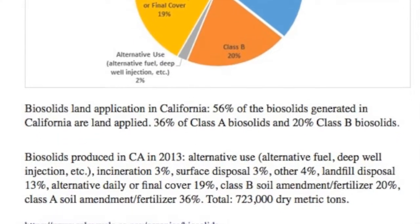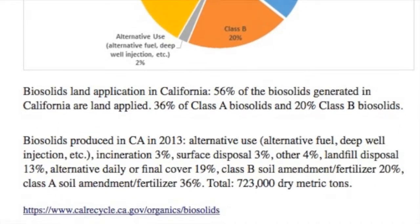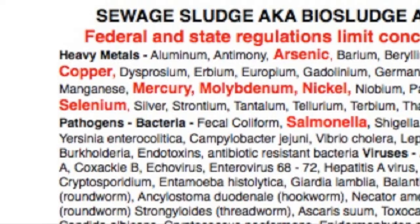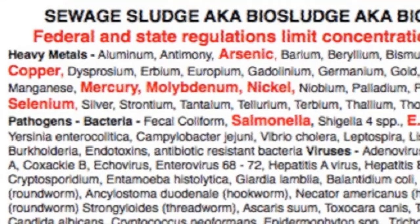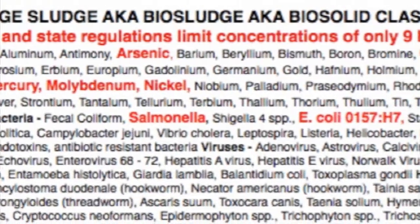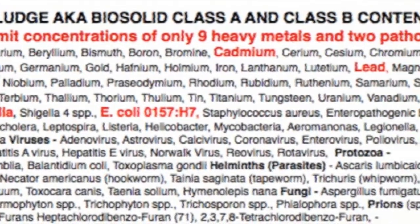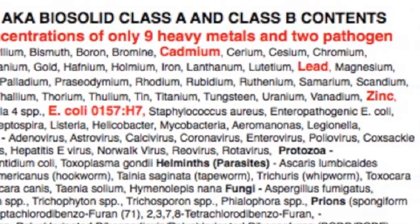This is just a short list of the things they find in the waste. The EPA themselves say there are over 365 — air quote — elements of concern. Nine heavy metals, two indicator bacterias, that's all you have to test for. The elements of concern include arsenic, cadmium, copper, lead, mercury, molybdenum, nickel, selenium, and zinc. Indicator bacterias are E. coli and salmonella.